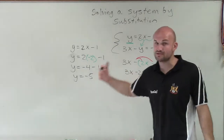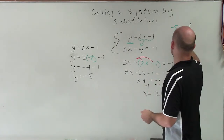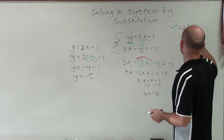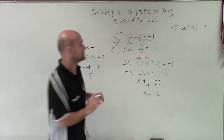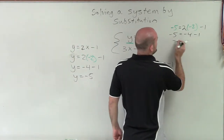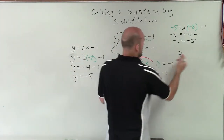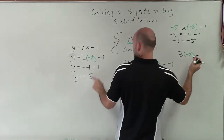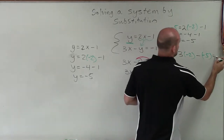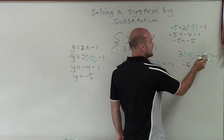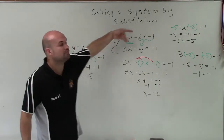Let's go ahead and prove it to make sure we did our algebra correctly. If I put negative 5 in for y, that equals 2 times negative 2 in for x, minus 1. Negative 5 equals negative 4 minus 1, so negative 5 equals negative 5 — true for the first equation. Now let's check the second equation: 3 times negative 2 minus negative 5 equals negative 1. 3 times negative 2 is negative 6, minus a negative 5 is positive 5, giving negative 6 plus 5 equals negative 1. Negative 1 equals negative 1 — true.